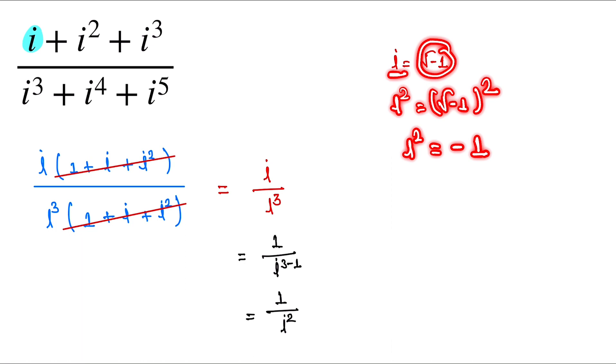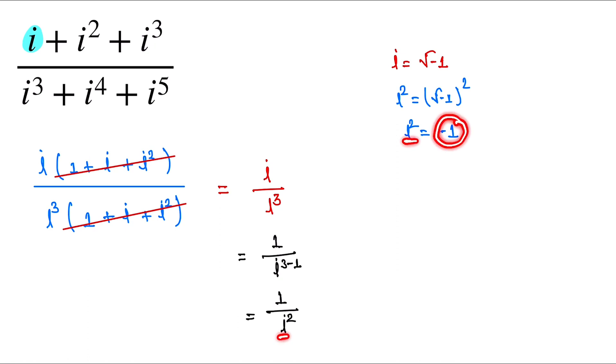Now we put the value of i squared is equal to minus 1 at this position. So here this one is equal to 1 by minus 1, and this one is equal to minus 1.